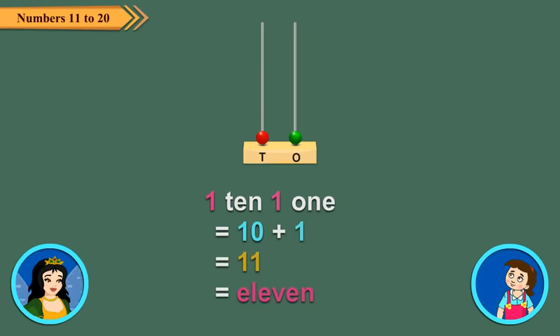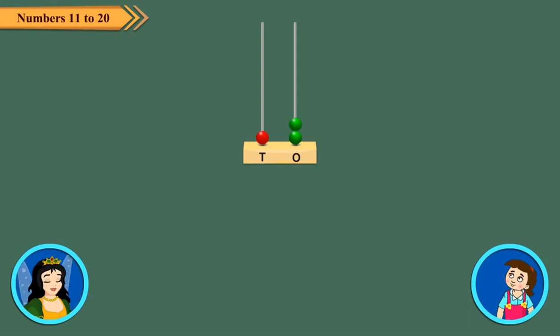Excellent! Now put one more green bead in the ones spike. How can we represent this number? We can represent this number as 1 ten and 2 ones. But what will be the name of this number? We call it 12.